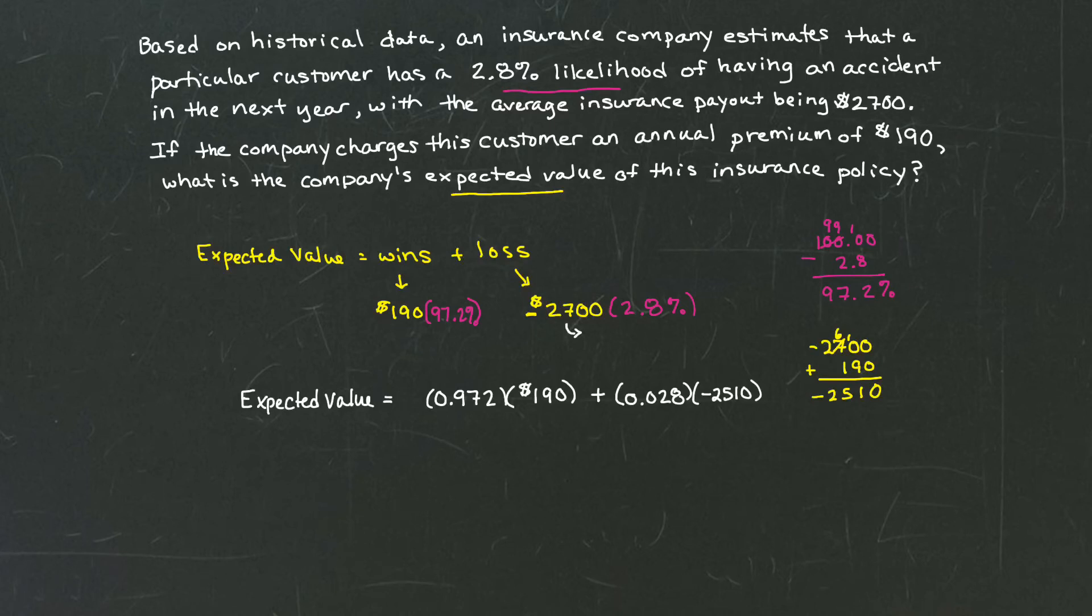Pulling out a calculator, we can do some math. So we're going to take 97.2%, or 0.972, and multiply it times 190. That's going to give us $184.68. That's our positive win.